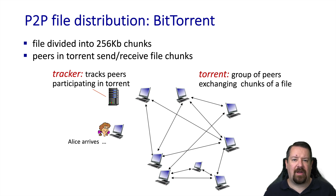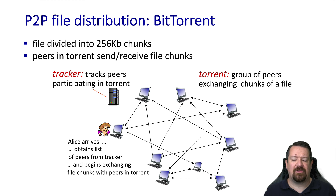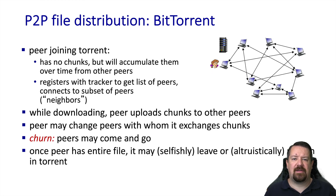Let's go through the process of what happens when a new peer wants to join the torrent. Alice now wants to join the torrent that is already active. First, she has to contact the tracker to obtain the list of peers that are participating in this torrent. This means that the tracker must be available in a predictable place, because otherwise Alice won't be able to find it. Once she has the list of peers, Alice can start exchanging chunks. At first she has no chunks to contribute, so she needs a way to get some chunks from the peers. Once she has one or more chunks, she can begin uploading those chunks while continuing to download more. The process of peers coming and going from the torrent is known as churn. The more churn that happens in the network, the more challenging it is to deliver all the chunks to all the peers in a timely manner.